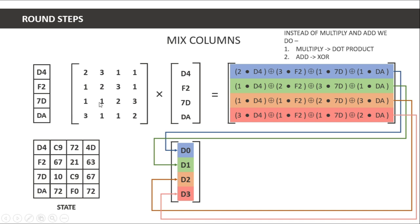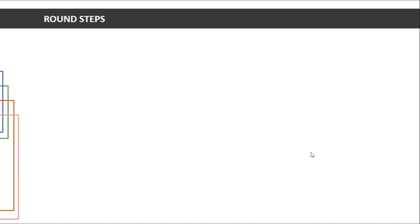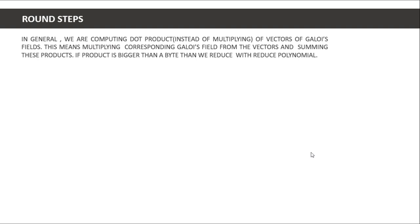We calculate the result for each column through mix columns. For example, from one column we get values like D4, F2, 70, DA, 19, 76, A9, and 47. We apply the same mix column process to each column and get the resultant state. The dot product in this context works differently because we are computing in Galois fields.